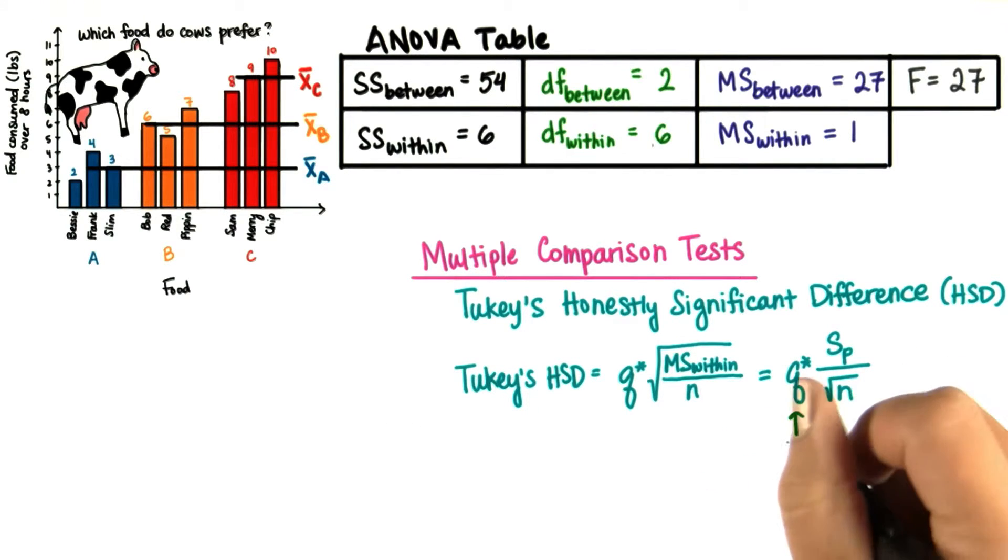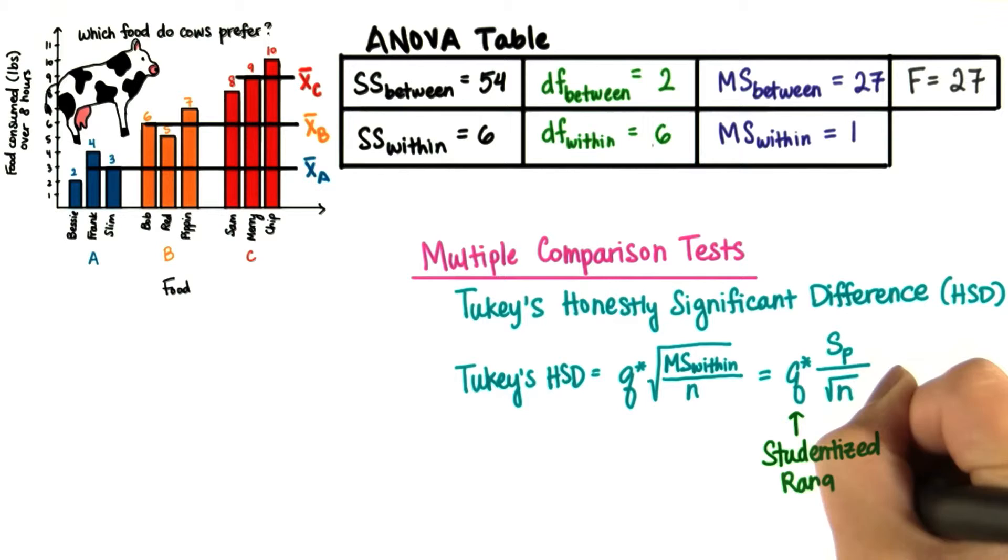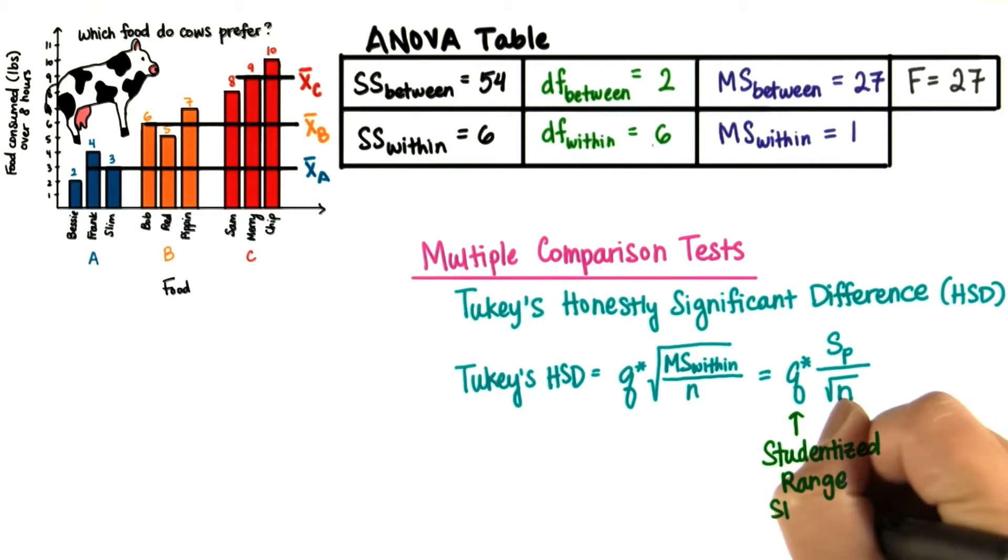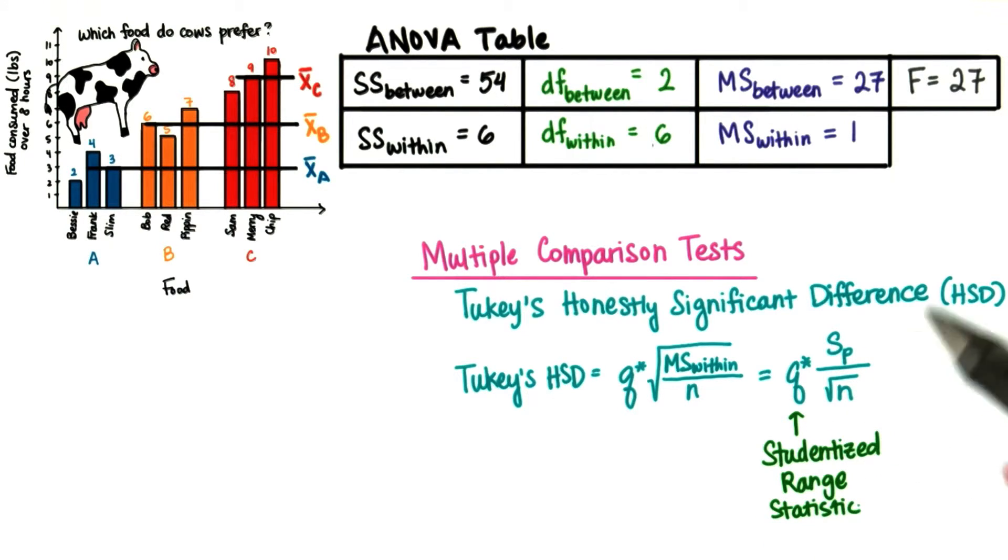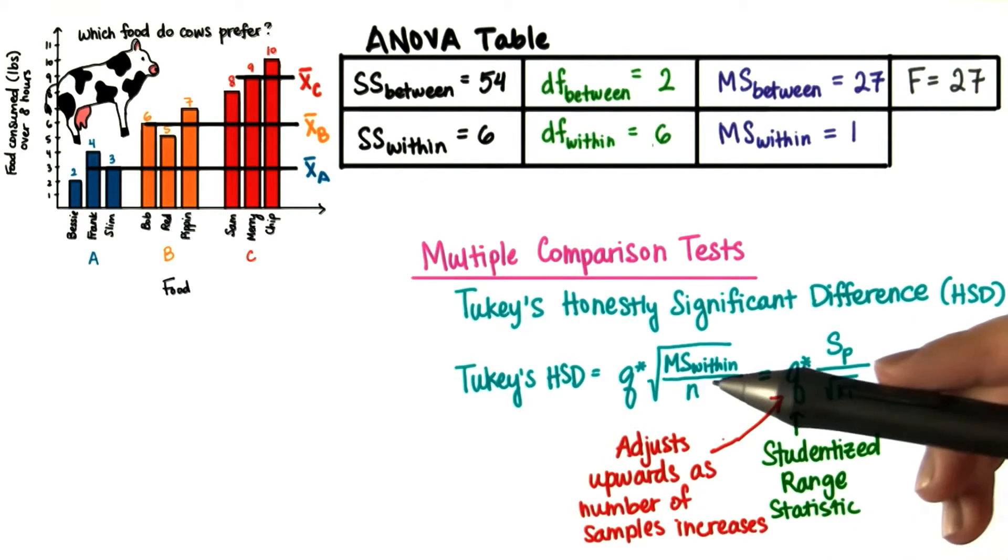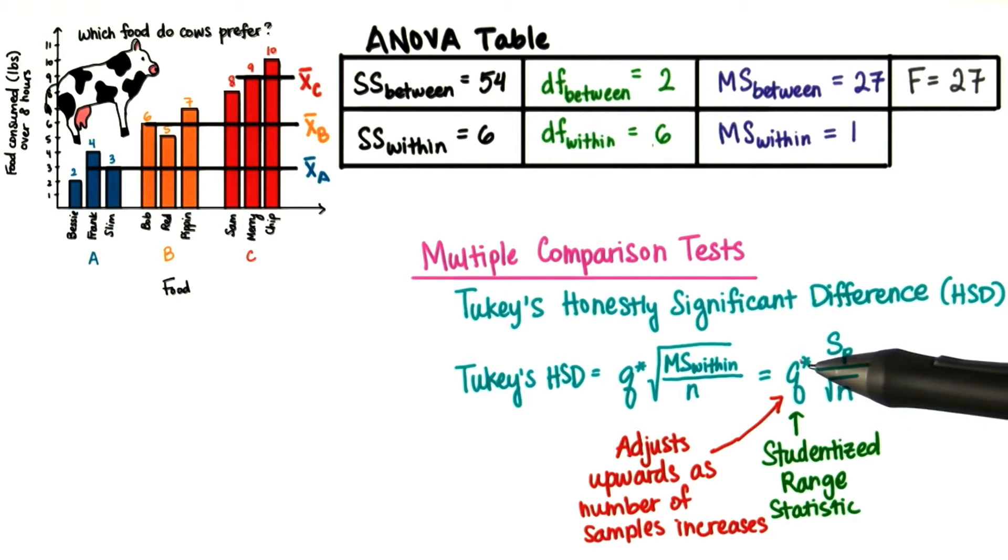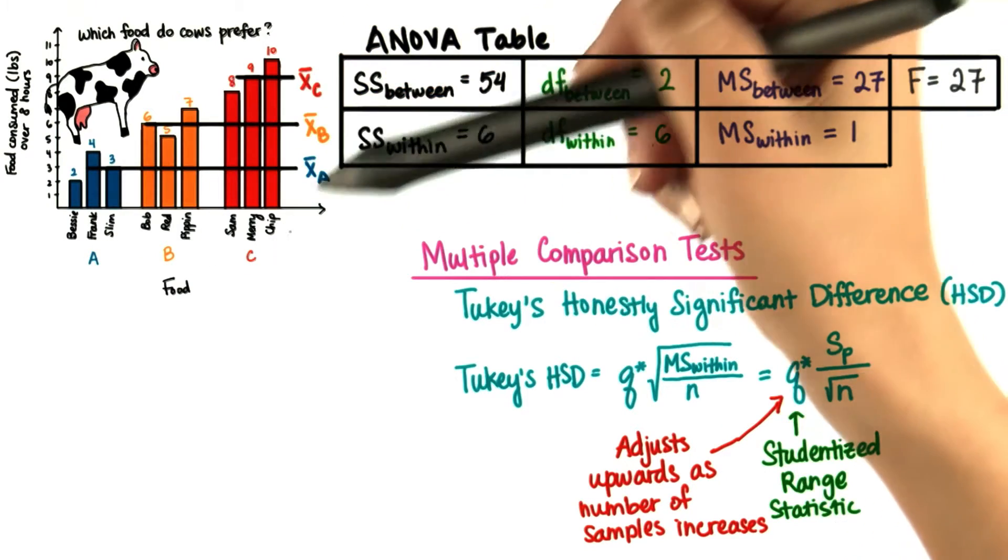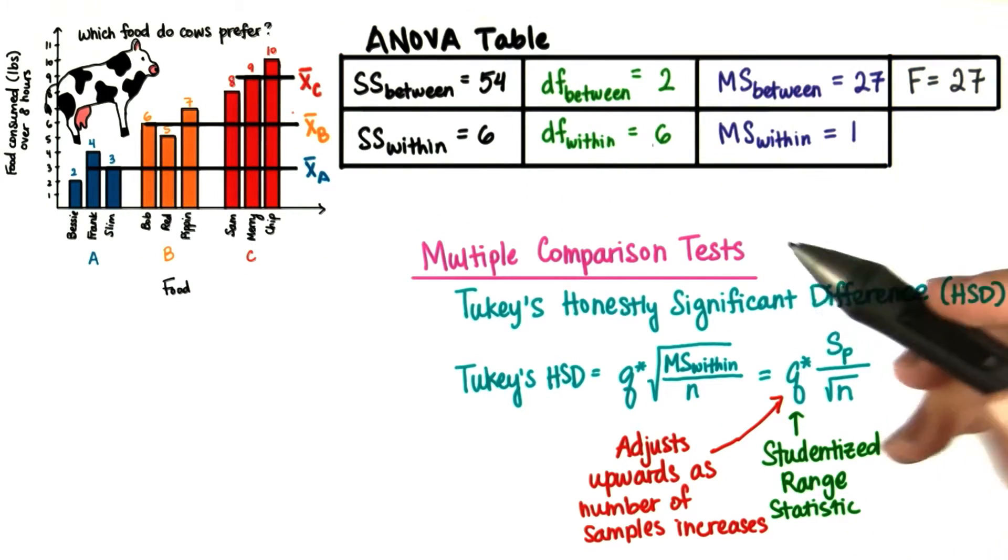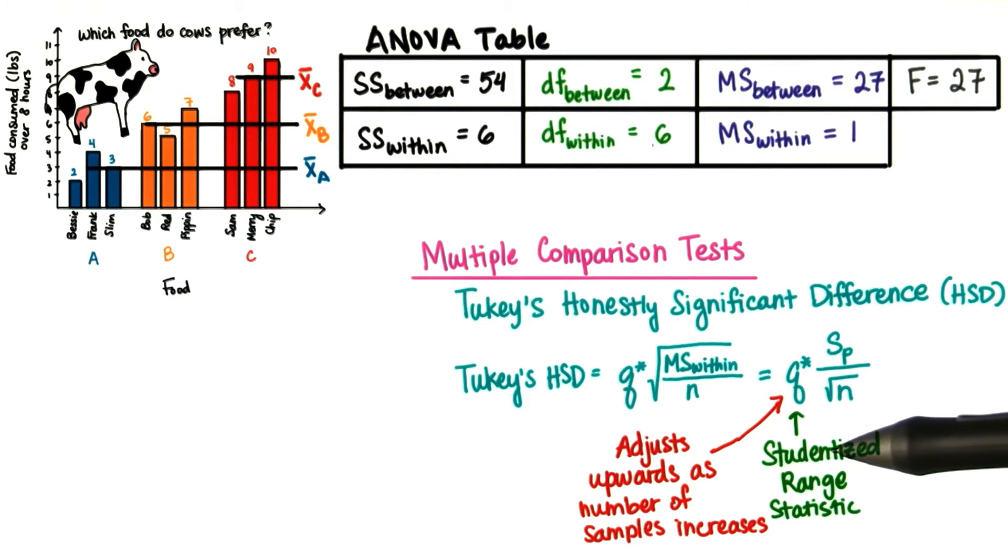Q is the studentized range statistic, and we find this in yet another table. Its purpose is to adjust the whole HSD so that it's less likely we commit a type 1 error. Remember a type 1 error is when we reject the null hypothesis when it's actually true. Since Q increases when there are more groups that we're comparing, it makes it less likely to commit a type 1 error.